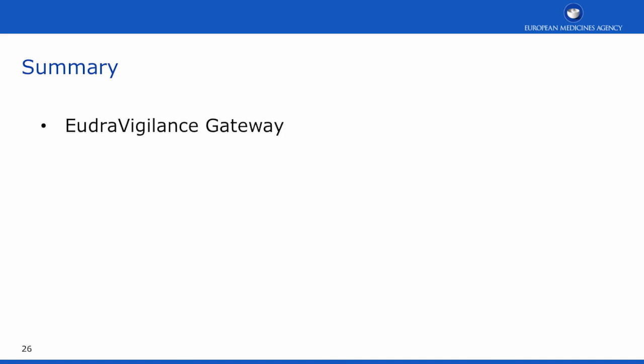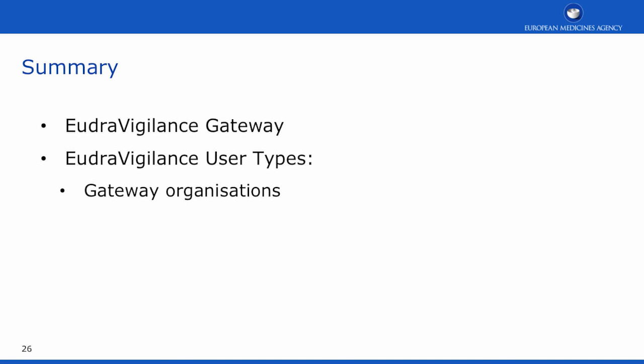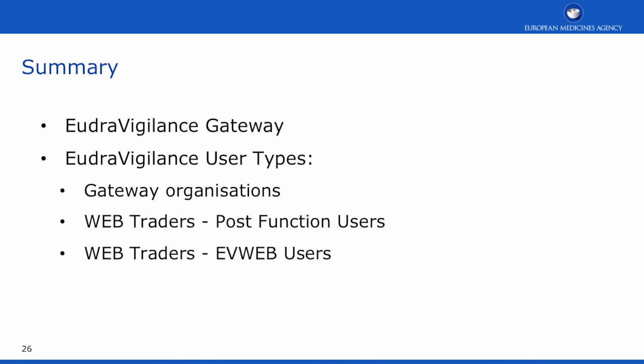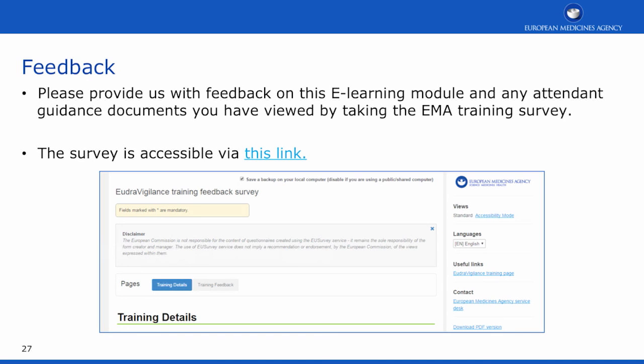In this training course we have learnt about the EudraVigilance gateway, EudraVigilance user types, gateway organisations, and the WebTrader POST functionality users and WebTrader EVWeb users. Please provide feedback on this e-learning module by taking the EMA training survey. A link is provided on this page.